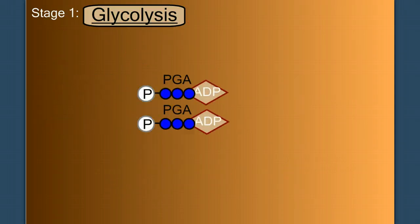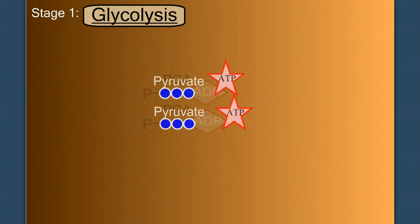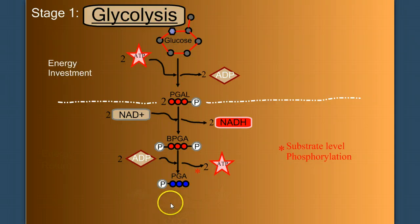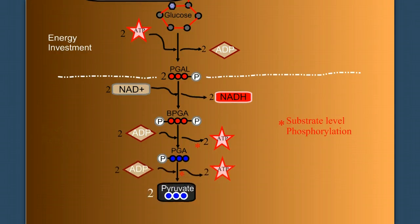The two phosphoglycerate then phosphorylate another two ADP into two more ATP, again by substrate level phosphorylation. And we end with two molecules of pyruvate. So let's finish this out. The two PGAs phosphorylate ADP into ATP, producing two pyruvate.